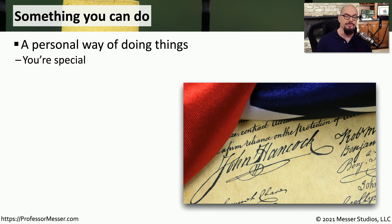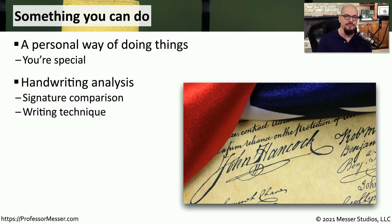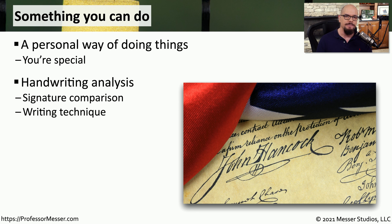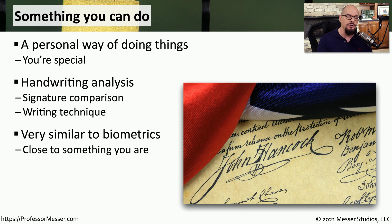Another attribute that can be used for authentication is something you can do — your personal way of doing things. A good example might be your signature. The way that you write your signature is something very unique to you, and it's very difficult for someone else to replicate. These attributes may seem similar to biometrics, but biometrics provide characteristics very specific to an individual, whereas something you can do is a much broader description of a characteristic.